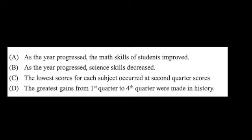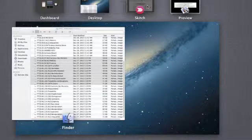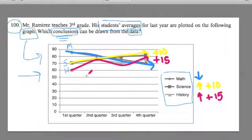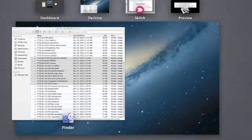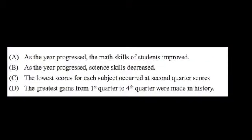C. The lowest scores for each subject occurred at the second quarter scores. All right. So maybe you don't remember that one. Well, if we go back here, definitely in the second quarter, which is this one here, math scores went down. But science and history both went up. So that one's not true based on the graph. And then finally,